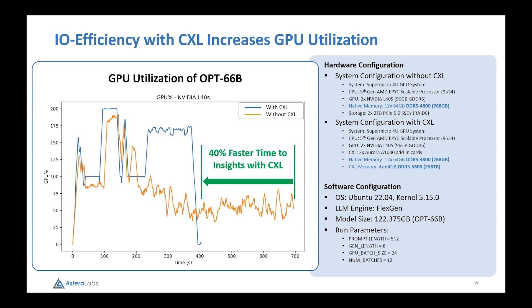Looking at the hardware configurations: we've got one CPU supporting two NVIDIA L40 GPUs, each with 48 gigabytes of GDDR6, for 96 gigabytes total. Local memory is 768 gigabytes. We also have a RAID 0 of two PCIe Gen 5 SSDs. What happened is the KV cache exceeded both the local memory and the GPU memory, spilling out onto disk for KV cache read and write operations — and that's what was really pulling down the performance. With CXL, we helped improve IO efficiency, and that's where the gains come from.